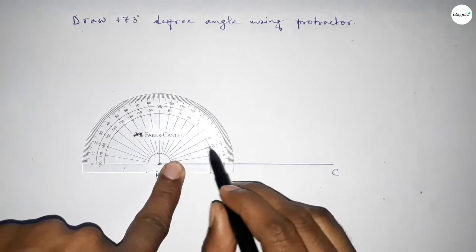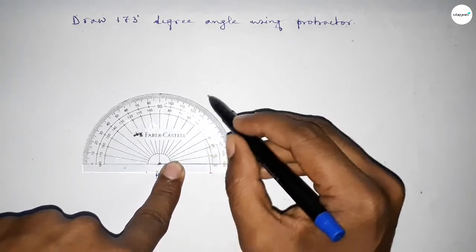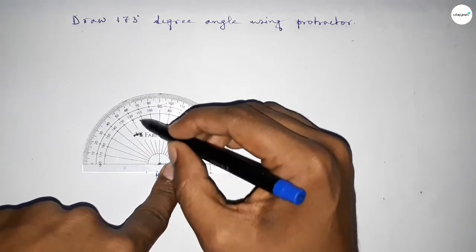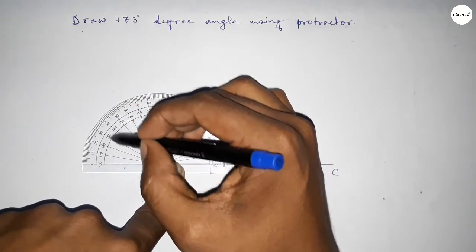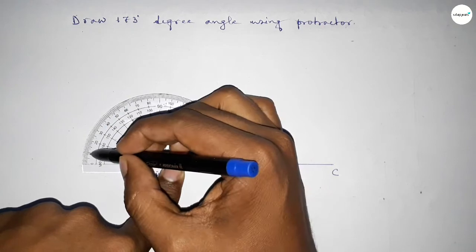So this is starting 0, 10, 20, 30, 40, 50, 60, 70, 80, 90, 100, 110, 120, 130, 140, 150, 160, 170.